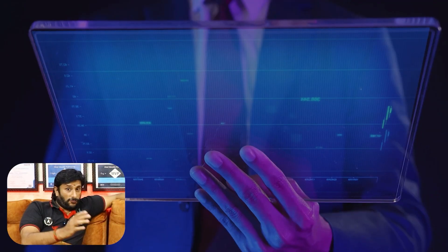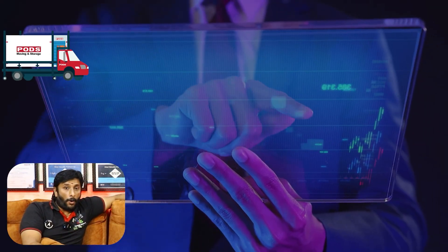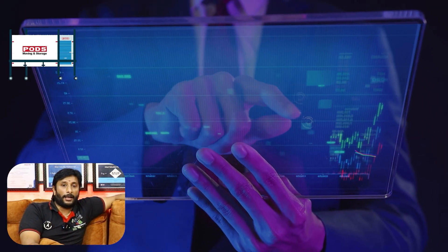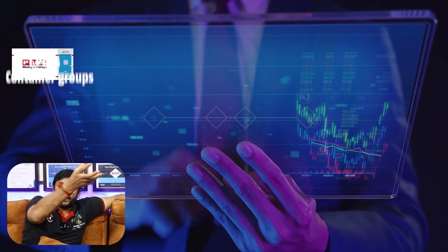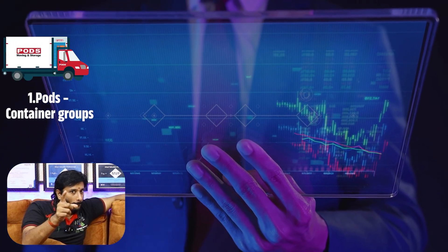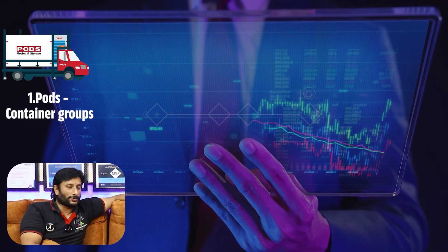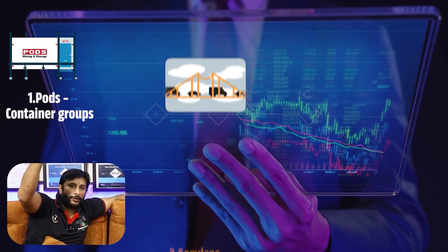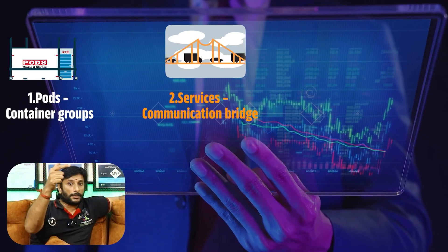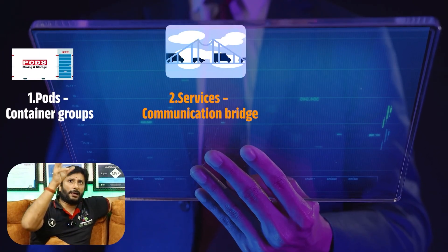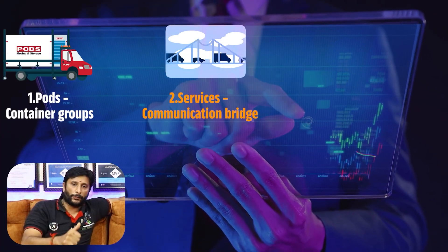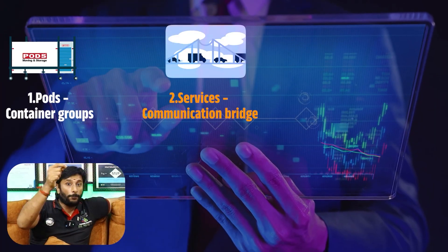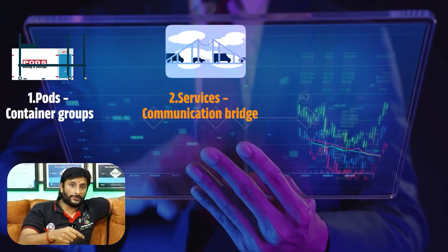Let's talk about the concepts of Kubernetes. First, pods - containers in groups, that's the pods. The idea is: number one is pods, number two is services. You can access that communication through services.